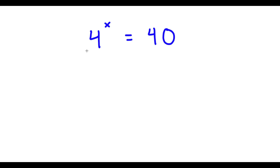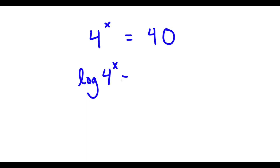In this problem, I have 4 to the power of x is equal to 40. To solve this, I'm going to take the log on both sides. So now I have log of 4 to the power of x is equal to log of 40.